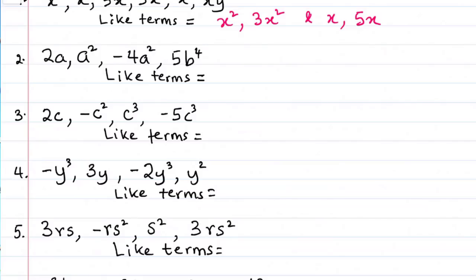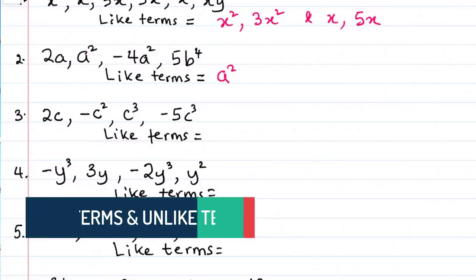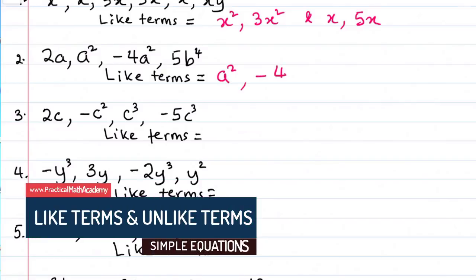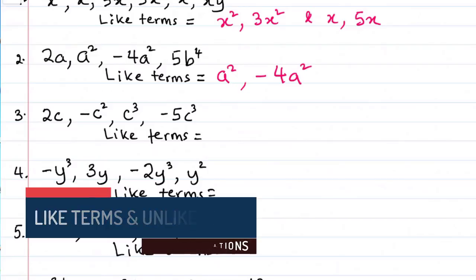Which one, where do we see similarity or common variables? 2a does not have a match. But we have a squared, and minus 4a squared. These are the only like terms that we have here.